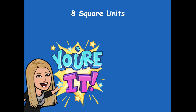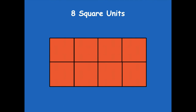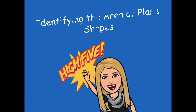Now create a rectangle with an area of eight square units. Here's what I came up with: two rows of four. Someone also said four rows of two — that's awesome too, great job! High five — great job identifying the area of plane shapes. Head back to the module to see what you need to complete for independent practice. If you have any questions I'm happy to help. Have a great rest of your day — bye, friends!